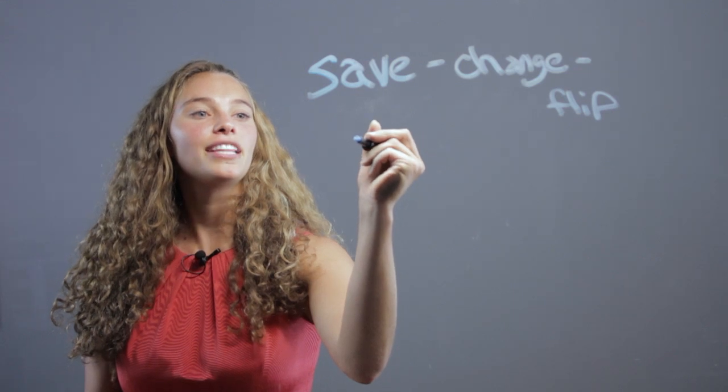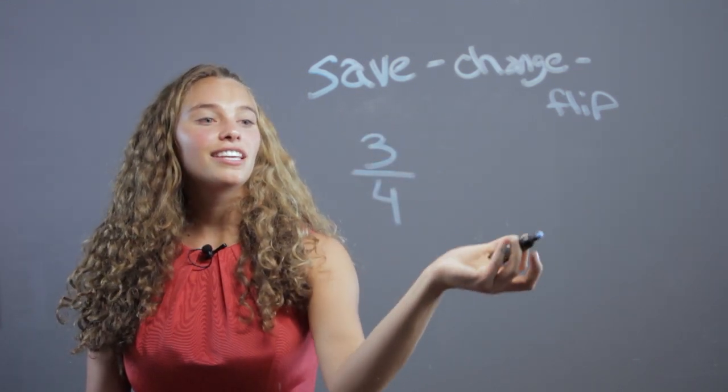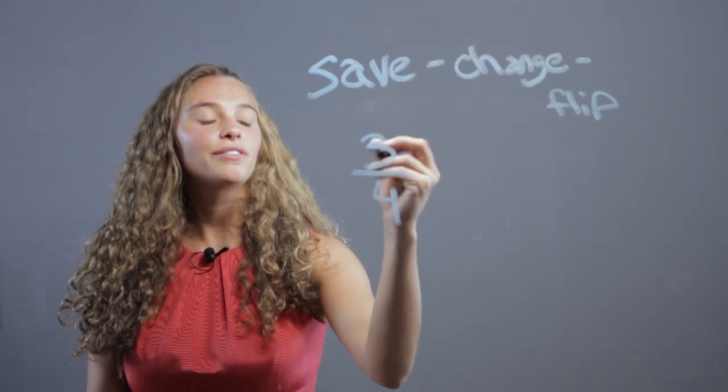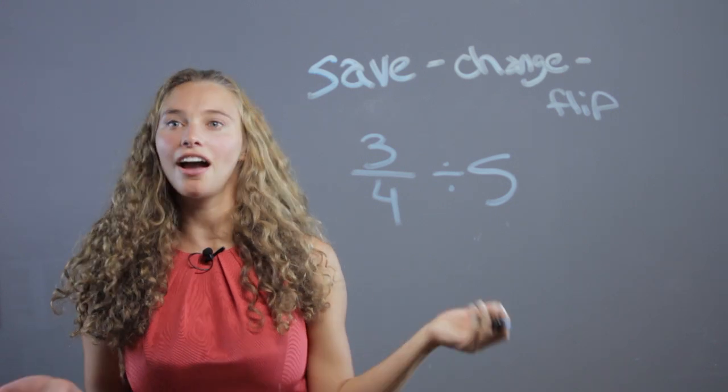Let's take a number. Say we have 3 fourths. We're dividing the number into the fraction. So 3 fourths, we're dividing it by 5. 3 fourths divided by 5. How do you do it?